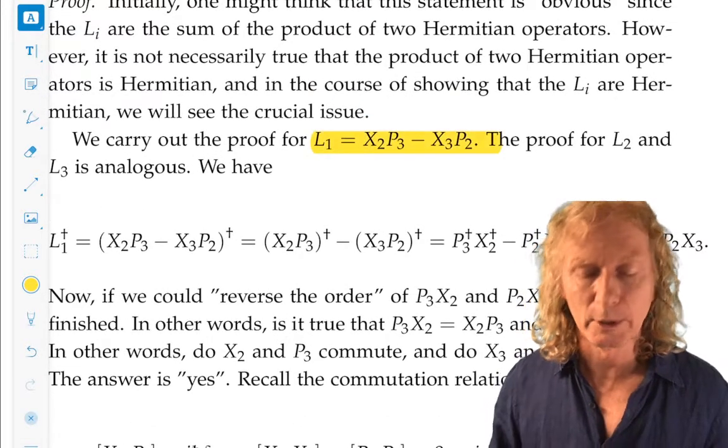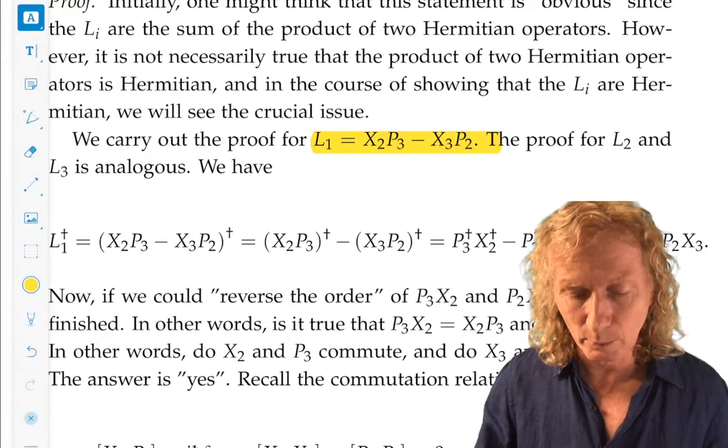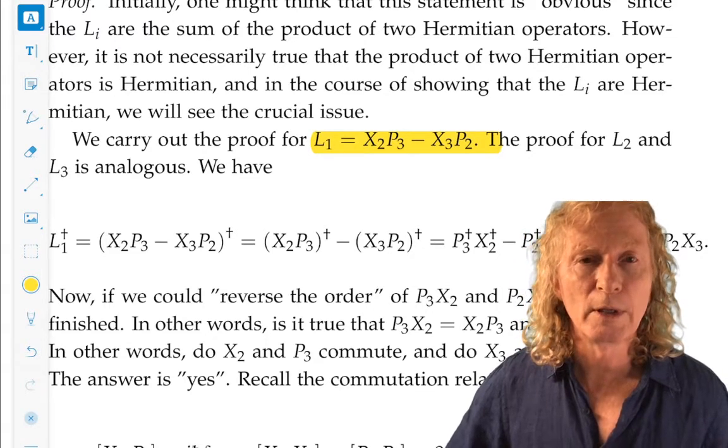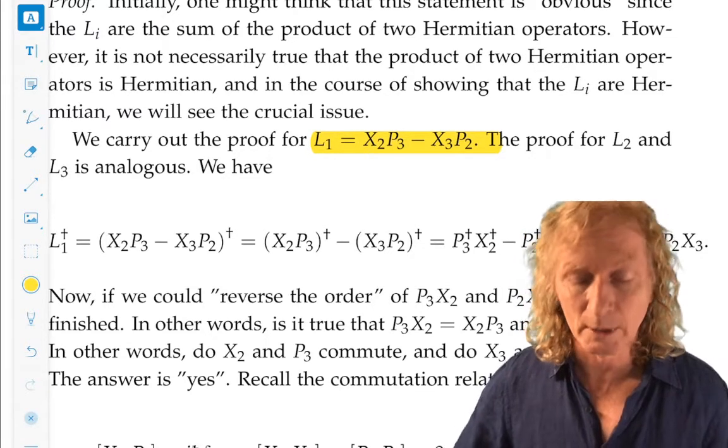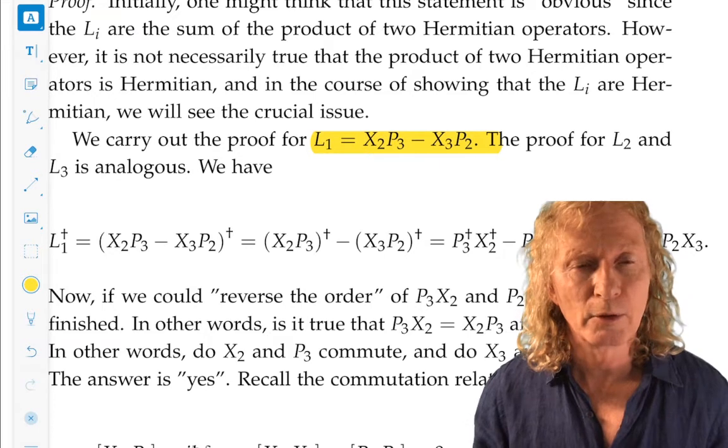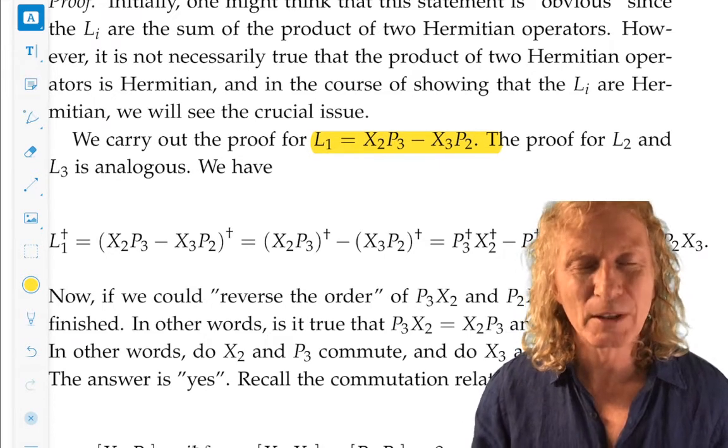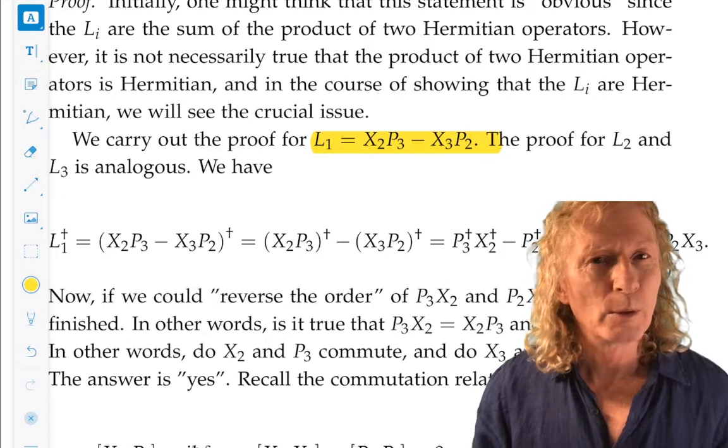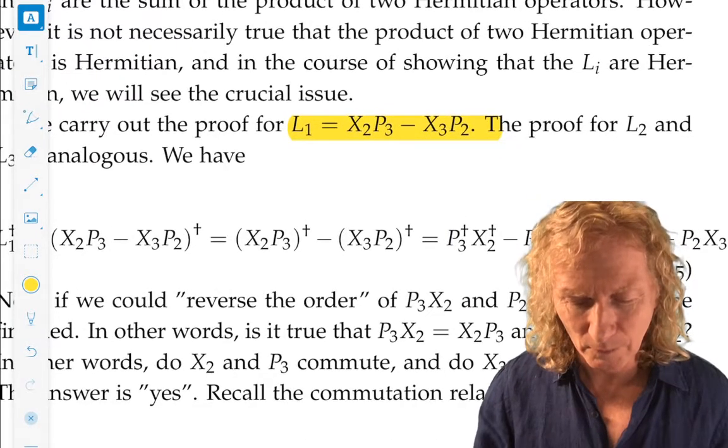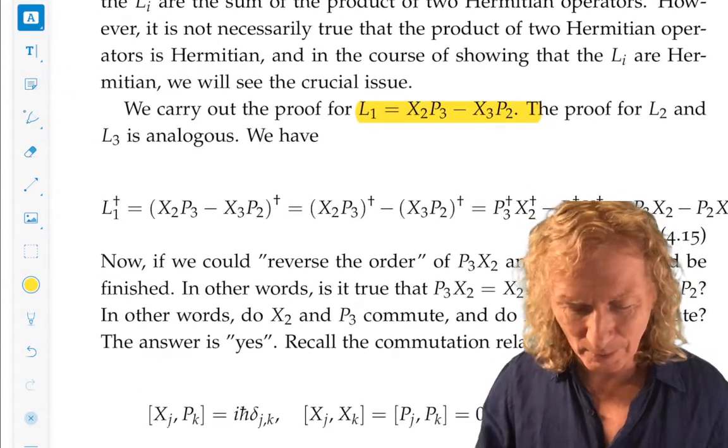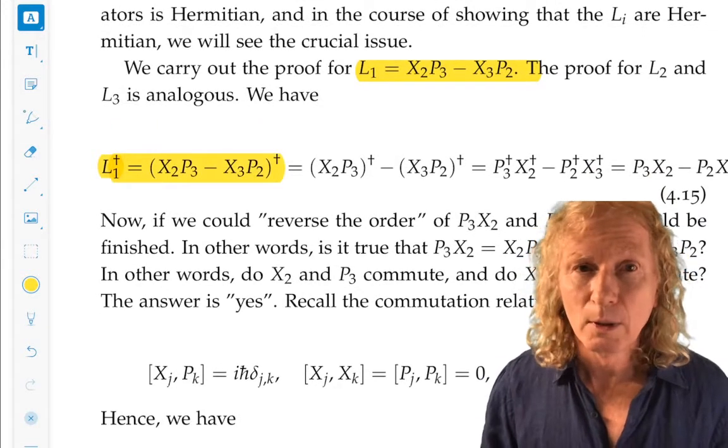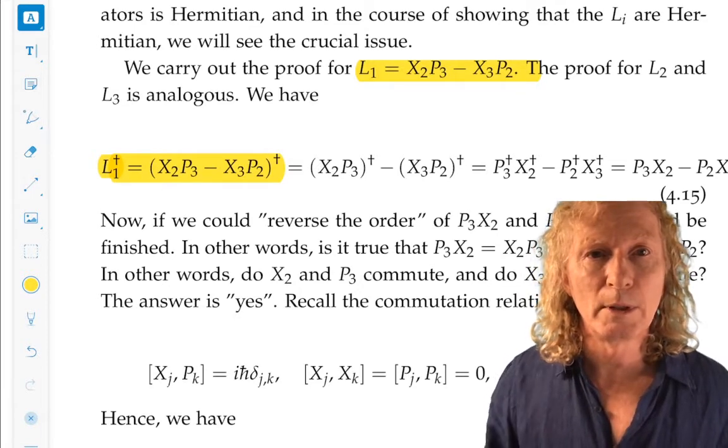Order is important. Remember that we're dealing with operators, and operators don't necessarily commute. If you look at this, this is the sum of two operators, so the adjoint of the sum is the sum of the adjoints. We proved that earlier. But now, what about the adjoint of the product of two operators? It's the product of each adjoint, but we reverse the factors. I was a little confused saying that, but let me show you exactly what we have.